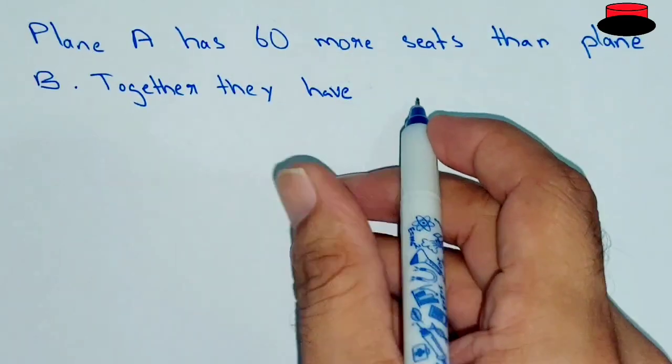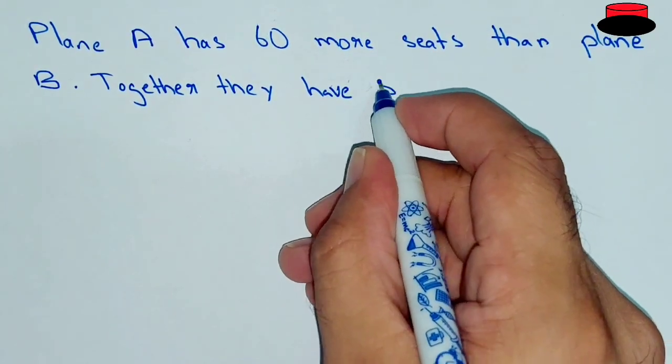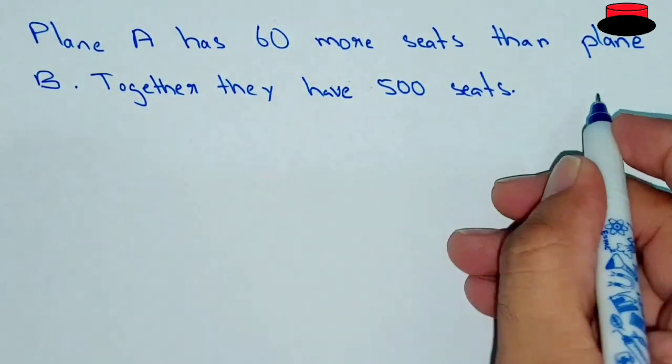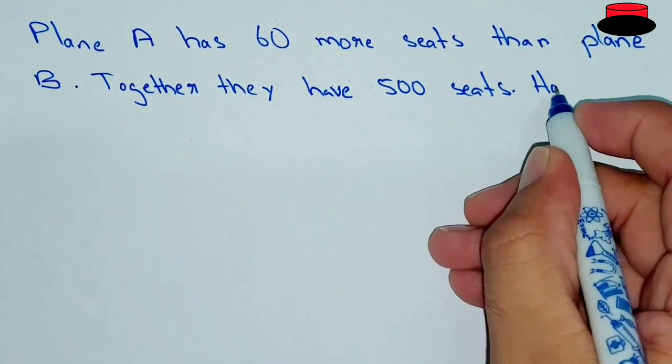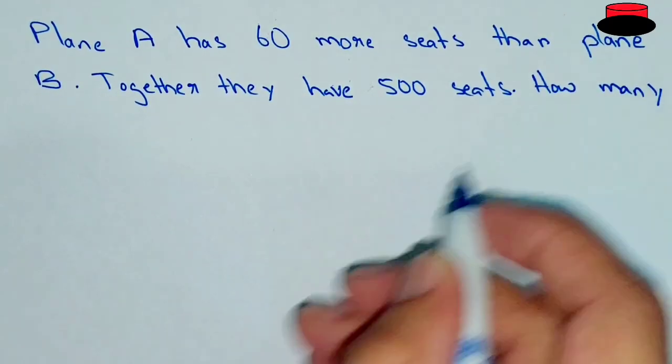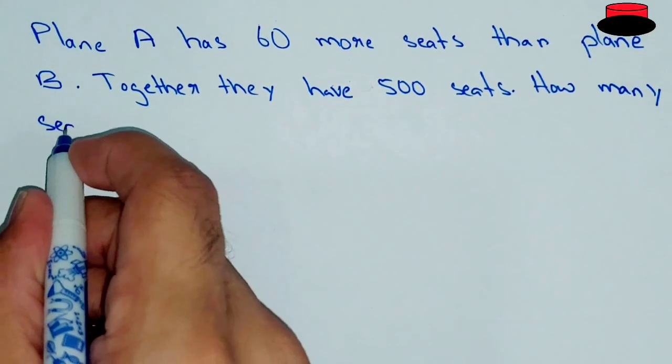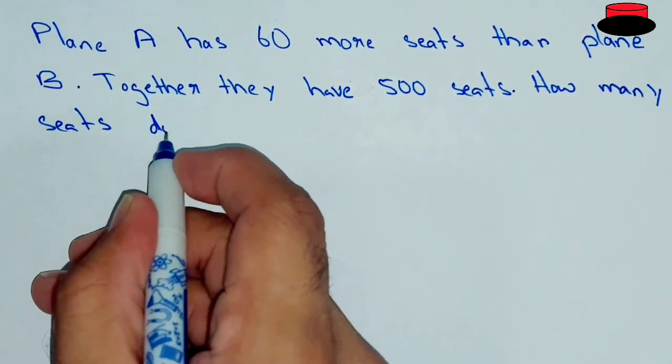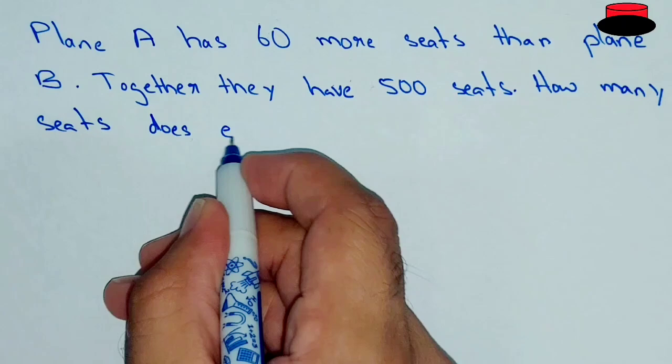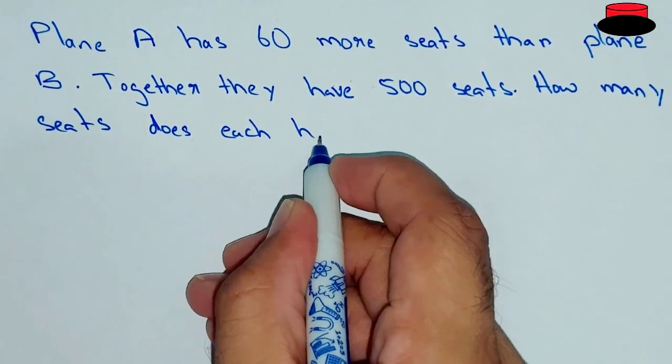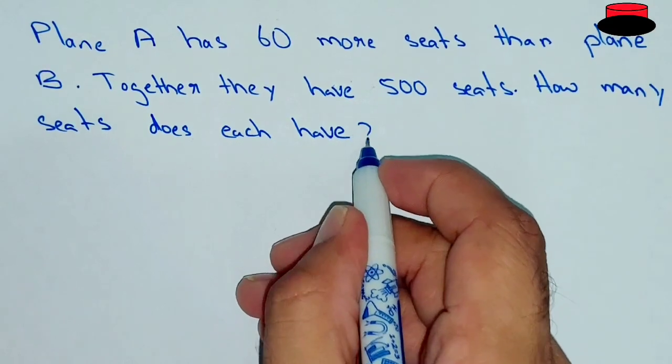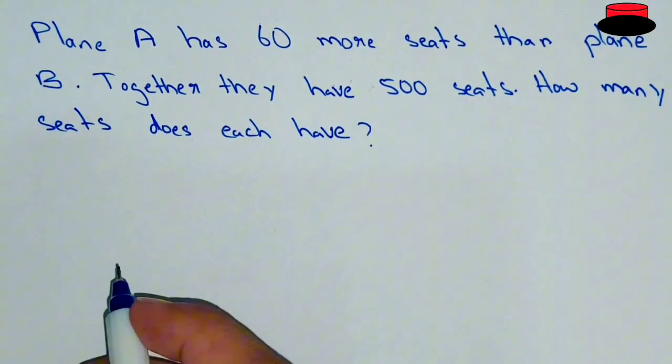they have 500 seats. It means if we have Plane A and Plane B, and the total number of seats in both planes are 500, so how many seats does each plane have? So this is our problem.